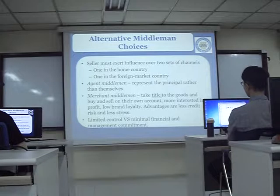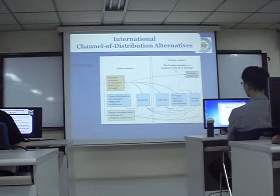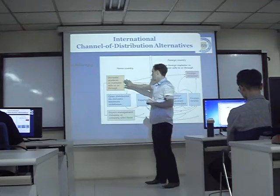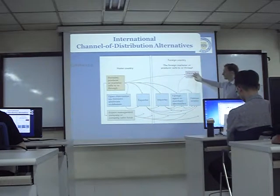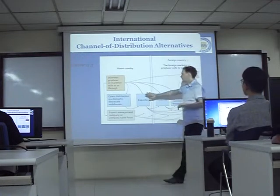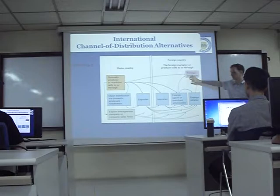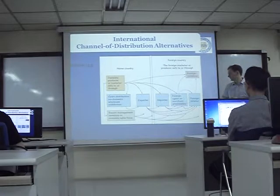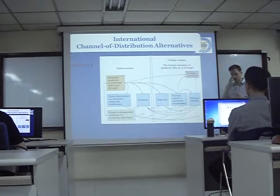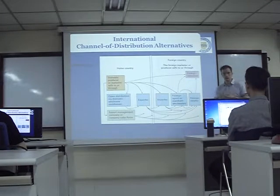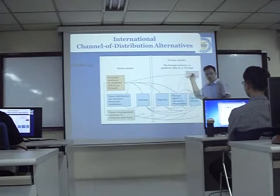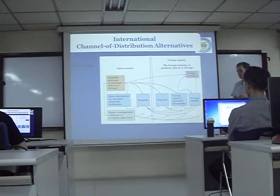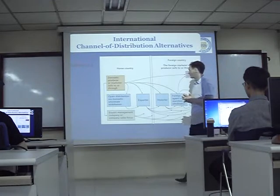So there are two main choices companies have about distributing their product. Here is a graph which shows all the different routes. We start off with the domestic producer and finish with the foreign consumer. We could go directly from domestic producer to foreign consumer — for example, if we have our own website and somebody in Finland orders from us and we post it to them. We send directly to the consumer, though it doesn't happen that often.